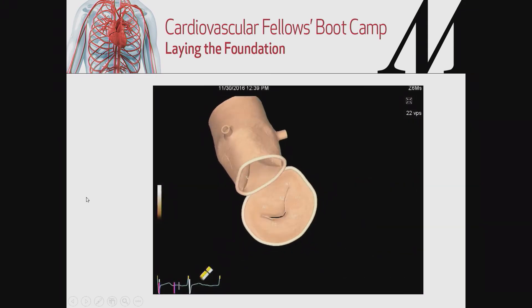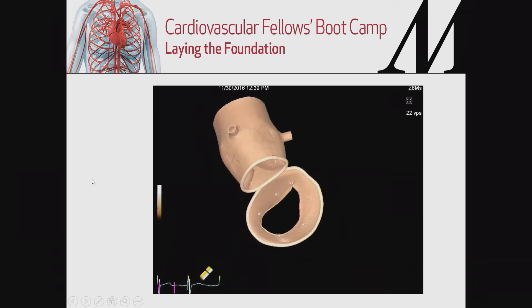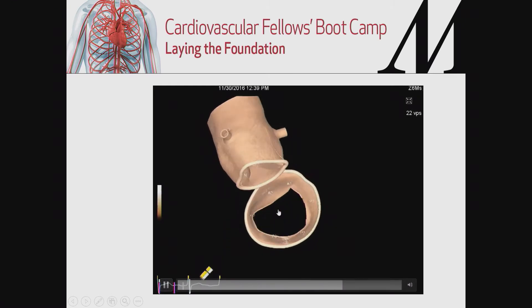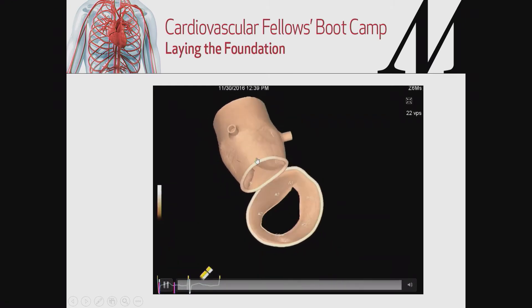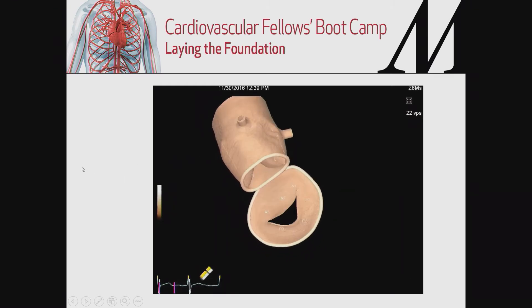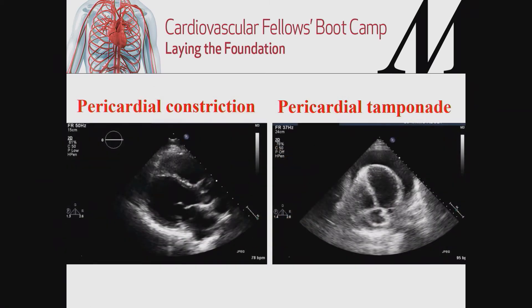New software using three-dimensional echo allows you to generate models — an aortic valve model and a mitral valve model in real time during transesophageal echo. You can even see the buttons of the coronary arteries. There is a lot of automation and machine learning that can be utilized these days.